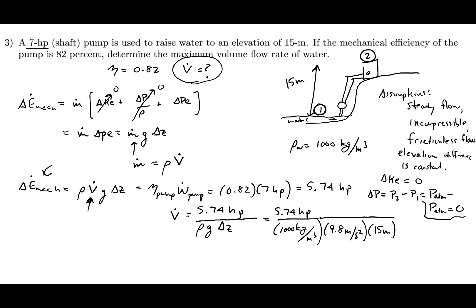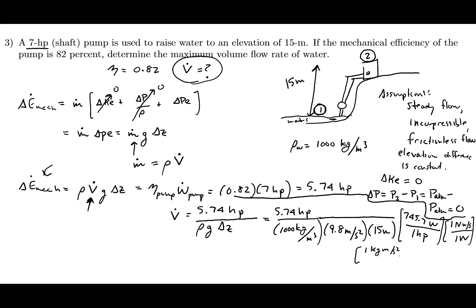We convert horsepower to watts: one horsepower equals 745.7 watts. Then we use 1 newton·meter per second per watt, and 1 kilogram·meter per second squared per newton to handle the unit conversions.